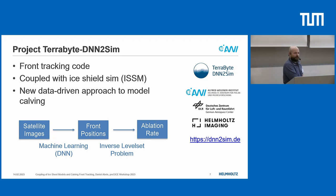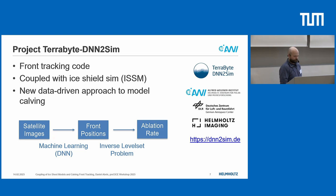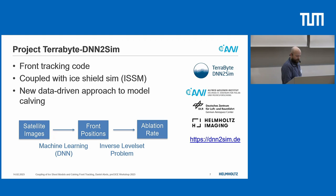We are developing a new front tracking code and want to couple this with a large ice sheet simulation software called ISSM. The core of the project is a new approach to model calving fronts. We want to extract the position of the front from satellite images using machine learning, and then solve an inverse problem to compute the ablation rate — the combined melting and calving rate. The project is in a very early stage, but the machine learning is already quite far along. We are working on a prototype for the front tracking code and the coupling preCICE adapter.